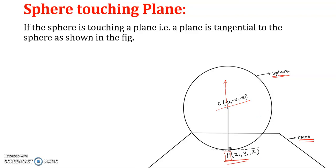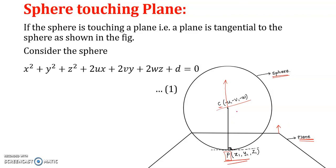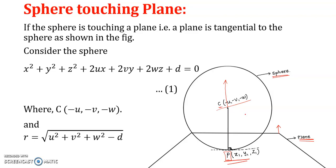From the equation of the sphere we can identify the coordinates of the center and its radius. From the equation of the plane we can find the direction ratios perpendicular to the plane, and from the point of contact we can identify the equation of the line passing through these two points. The center of the sphere has coordinates (−u, −v, −w) and the radius can be calculated using the standard formula.